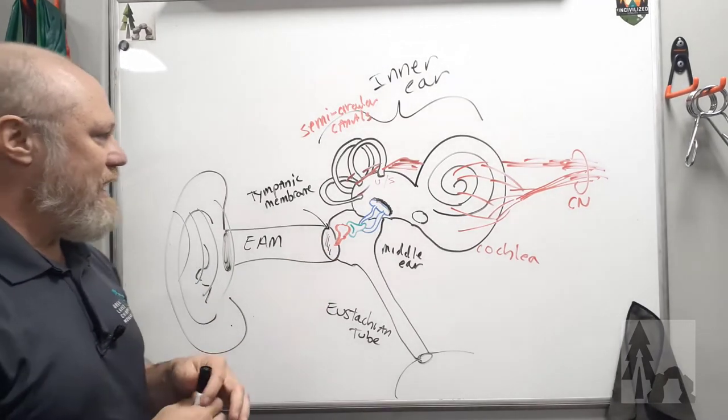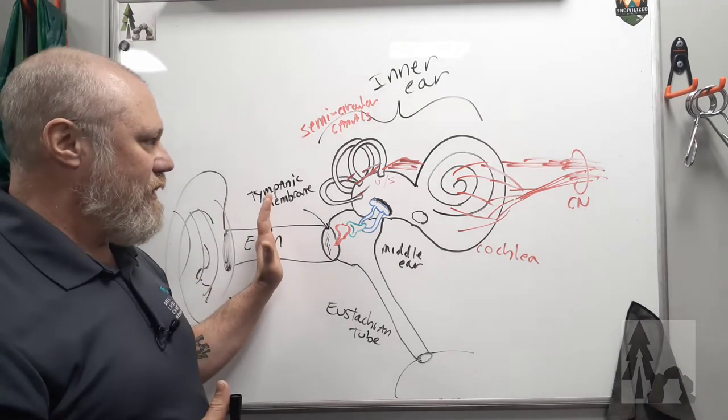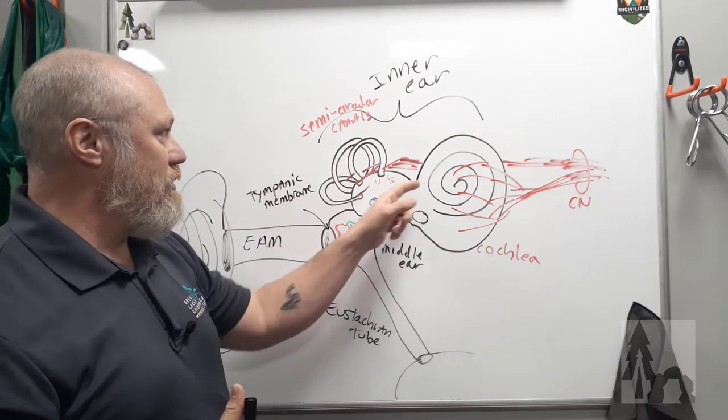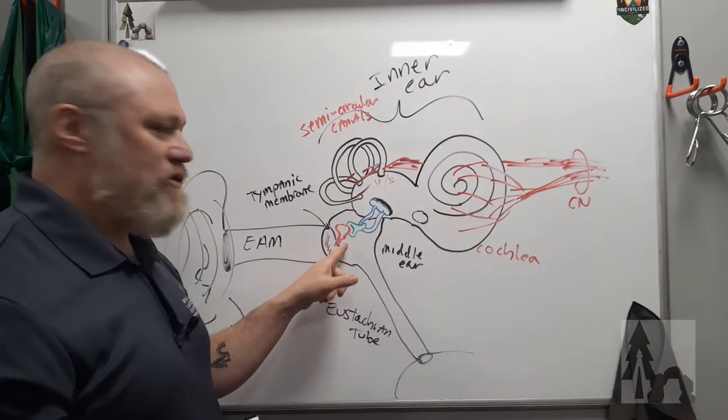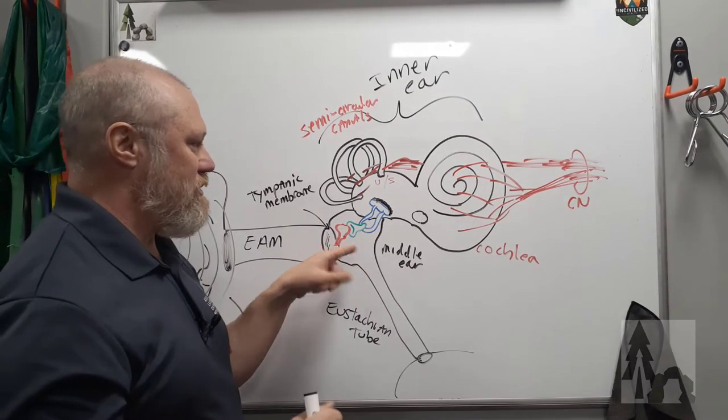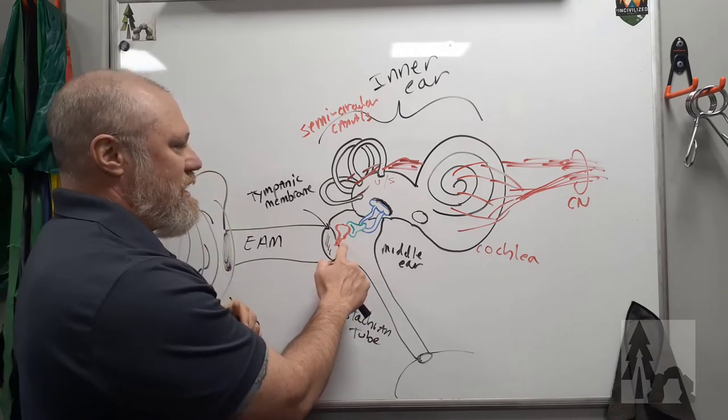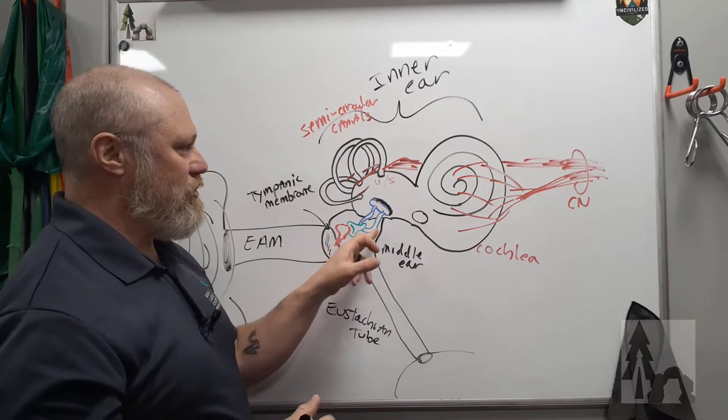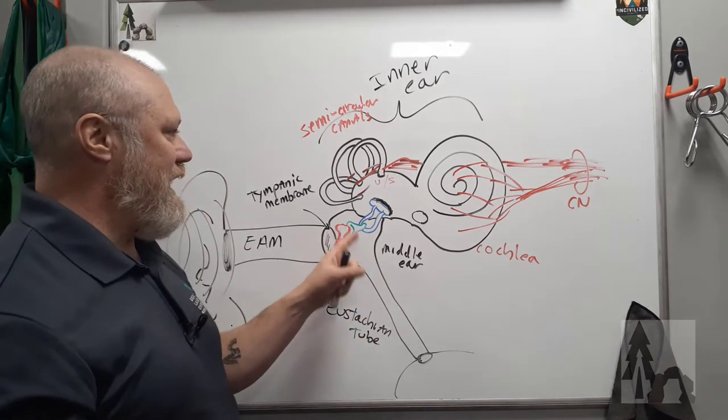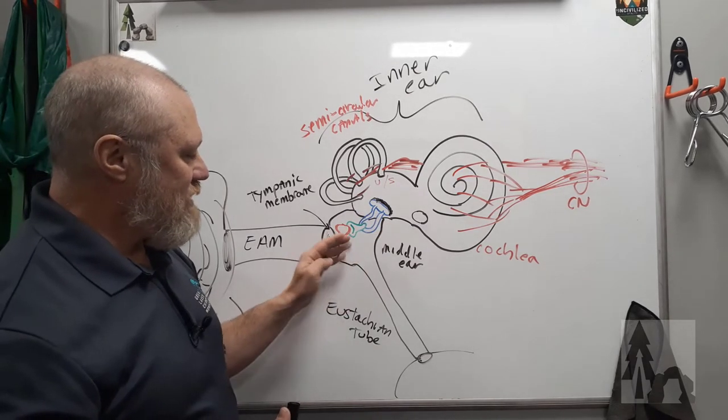The tympanic membrane will then relay the sound wave across to the inner ear by vibrating or moving these three ossicles, these tiny bones, little ossicles. They're the malleus, the incus, and the stapes, or the hammer, anvil, and stirrup. And they really do kind of look like that, the hammer, the anvil, and the stirrup.